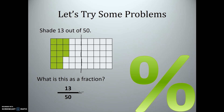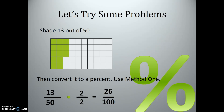So let's write 13 out of 50 as a fraction. Now let's convert to a percentage using method one. Our goal is to get the denominator to 100, so we multiply by 2 over 2 — the same as multiplying by 1 — and we get 26 out of 100, which we write as 26%.